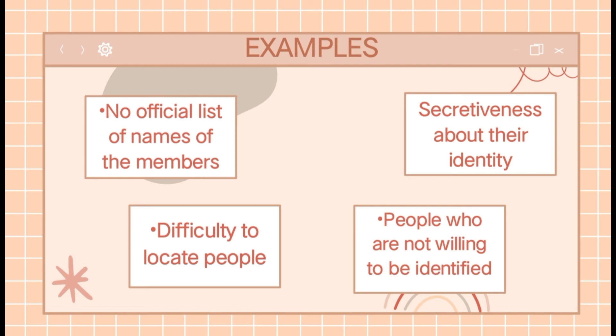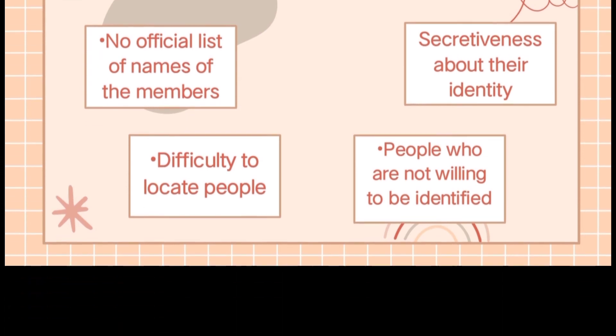Lastly is People who are not willing to be identified. If a researcher is carrying out a study which involves collecting information or data from sex workers, victims of sexual assault, or individuals who don't want to disclose their sexual orientation, these individuals will fall under this category.